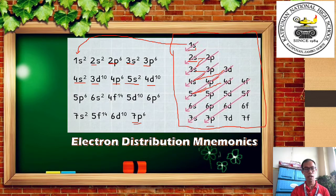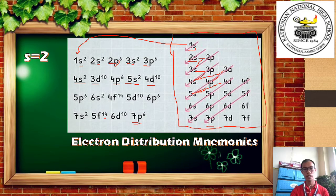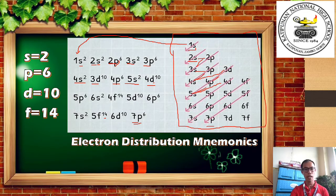You might ask why all s entries have 2 as a superscript. In mathematics we call it an exponent, but here we call it a superscript. All s has 2, all p has 6, all d has 10, and all f has 14. This is because s can hold a maximum of 2 electrons, p can hold a maximum of 6 electrons, d can hold a maximum of 10 electrons, and f can hold a maximum of 14 electrons.